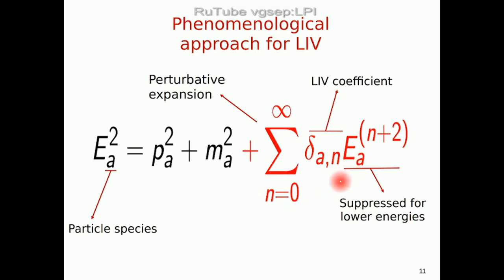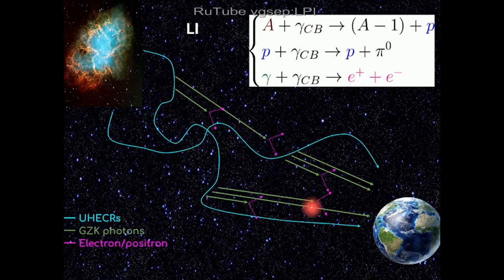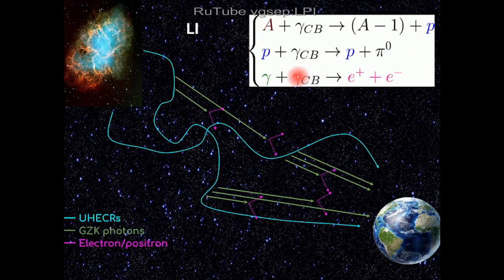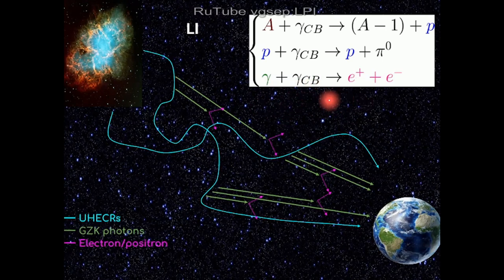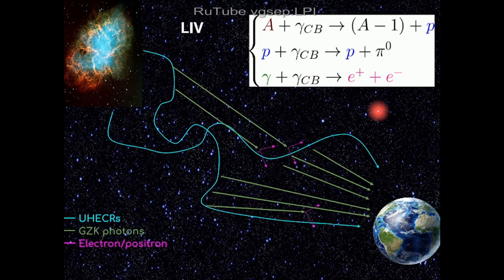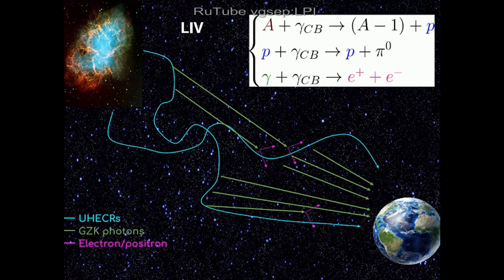This is done perturbatively, so we have different orders and different terms of the expansion to test independently. In the simulation, nuclei interact with photon backgrounds breaking into lighter nuclei; protons interact with photon backgrounds producing pions; these pions decay into high-energy photons; these photons interact with background photons producing pairs. All of these interactions must be implemented allowing a certain value of the break, and the number of particles arriving on Earth changes under Lorentz invariance violation.